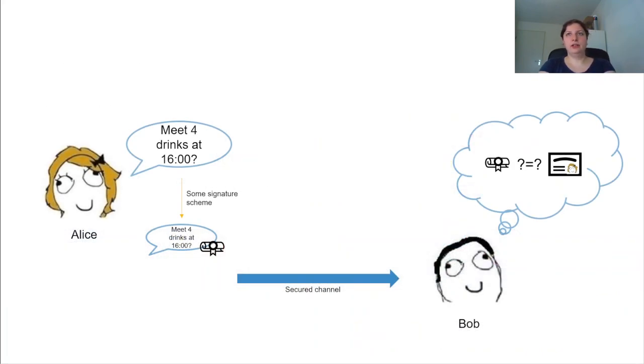As an introduction, let me first set the setting. We have Alice who wants to send a message to Bob, namely to meet for drinks at 4. And to make sure that Bob can verify that this message actually comes from Alice,